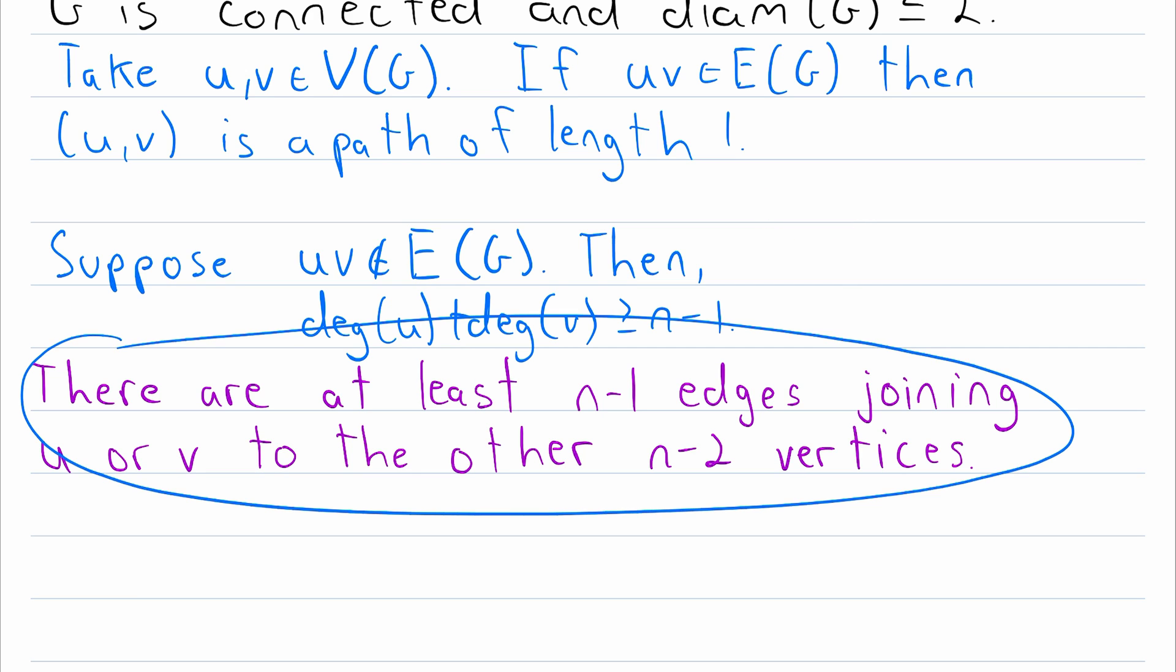And again, we know this because the degree of U plus the degree of V is greater than or equal to n minus 1, and we know that U and V are non-adjacent. So all of these at least n minus 1 edges have to join U or V to the other n minus 2 vertices.